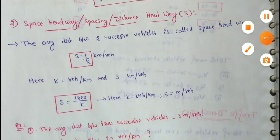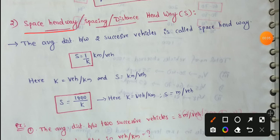Next topic: space headway. Space headway is one of the derivative parameters, also called spacing or distance headway. It is indicated by S. It is the average distance between two successive vehicles, called space headway.